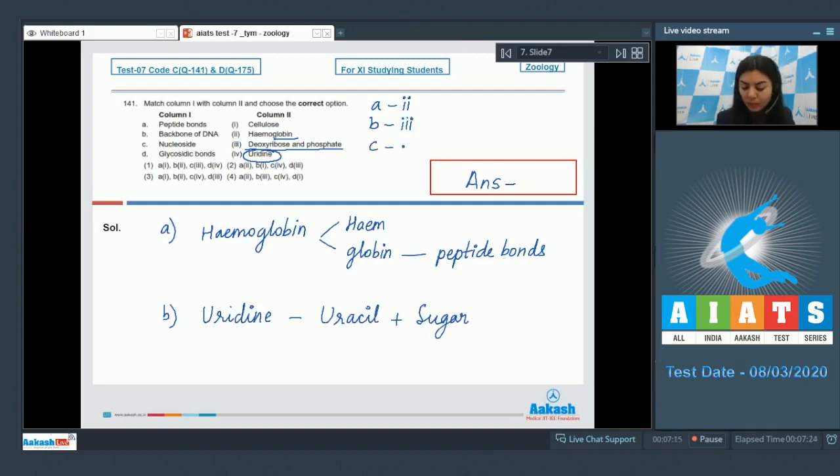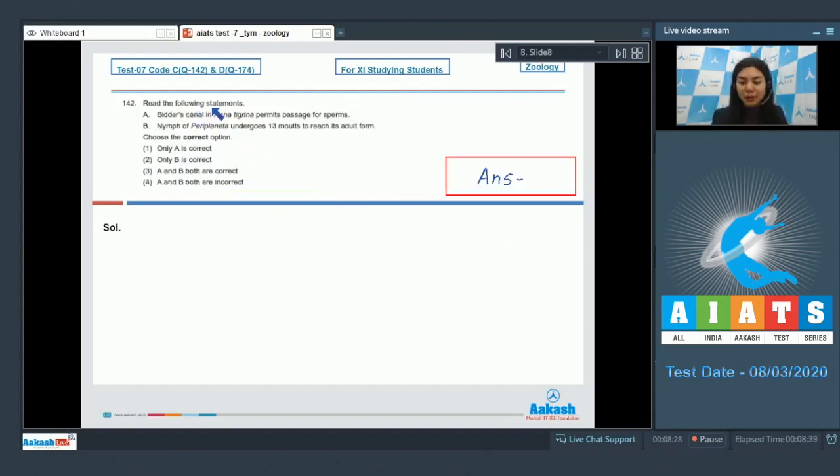C goes with 4 of column 2. Lastly, glycosidic bonds are found in polysaccharides like a polymer of glucose, that is cellulose. D goes with 1. In the given options, A2 B3 C4 D1 is option 4. The correct answer is option number 4.